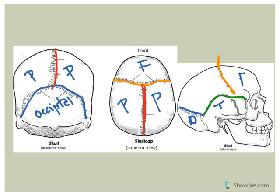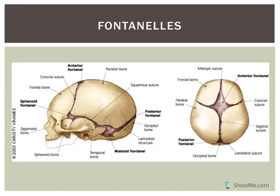Some of these sutures aren't visible right away. When a baby is born, they have soft spots called fontanelles. These soft spots allow the head to get through the birth canal. After birth, the fontanelles close at different times — they become ossified and replaced by bone, forming those sutures that connect the bones. You don't have to identify the fontanelles, but be aware of them.